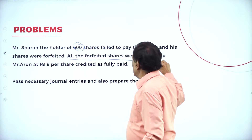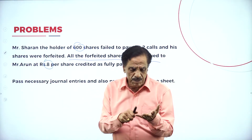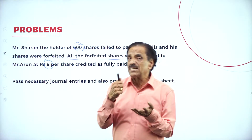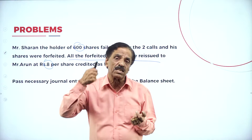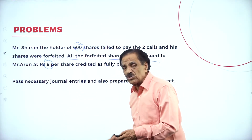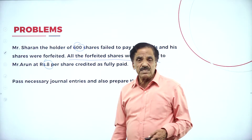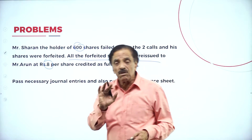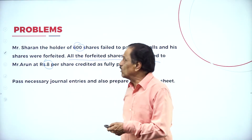All the forfeited shares were reissued to PC. First man holds 1,000 shares, second man holds 600 shares — total 1,600 shares reissued. Regarding the problem, we have to pass the general journal entry and prepare the balance sheet. Before the balance sheet, we need to prepare the bank account. We will go slowly.